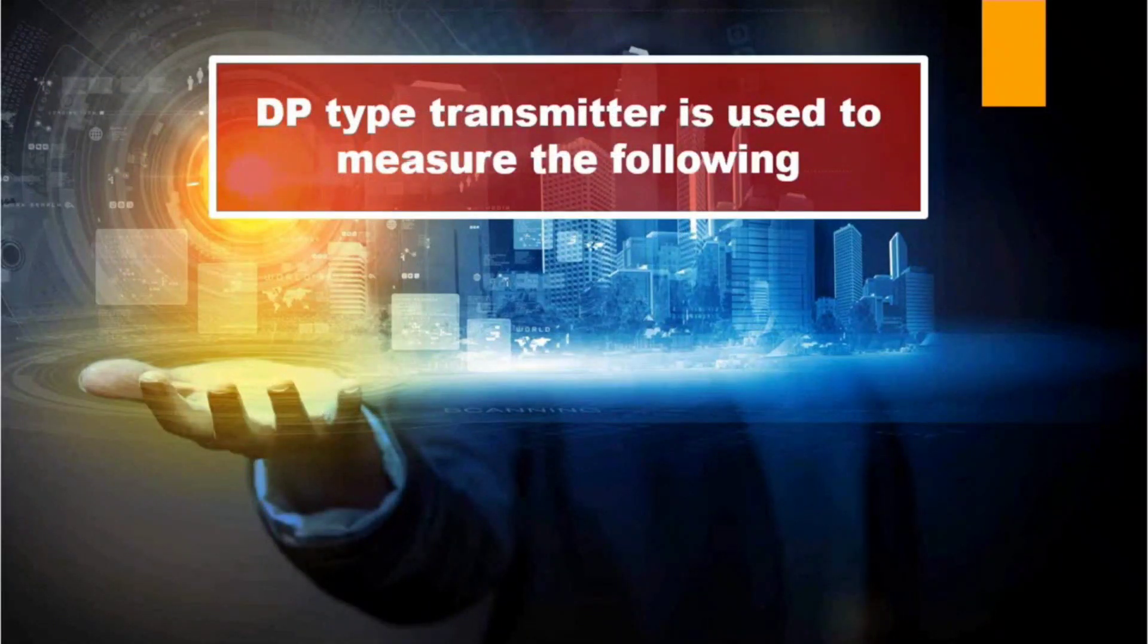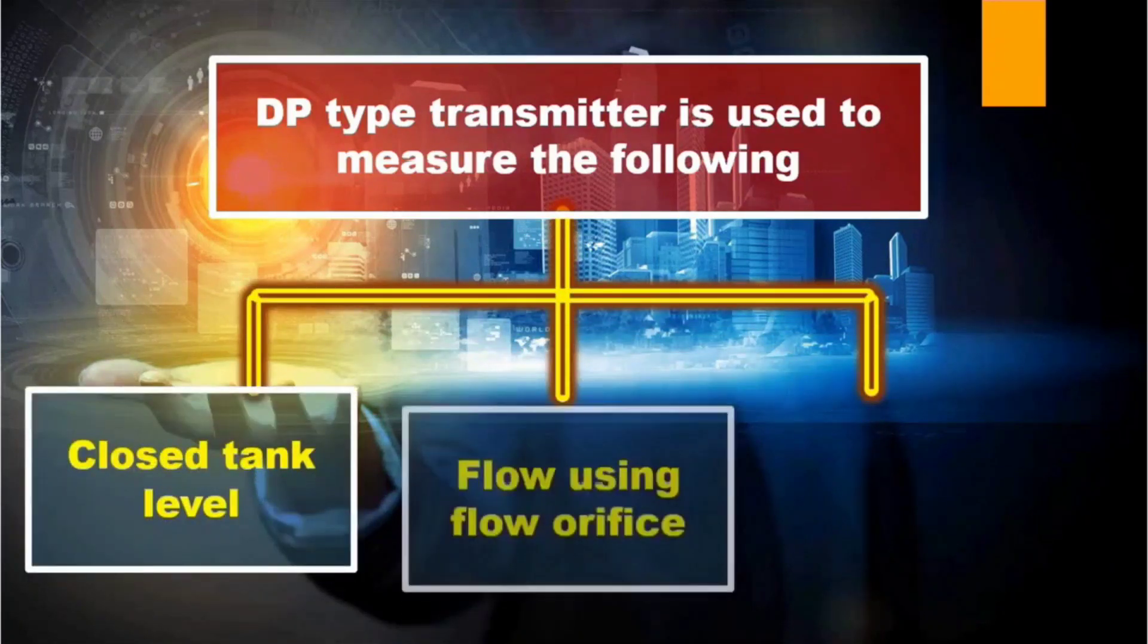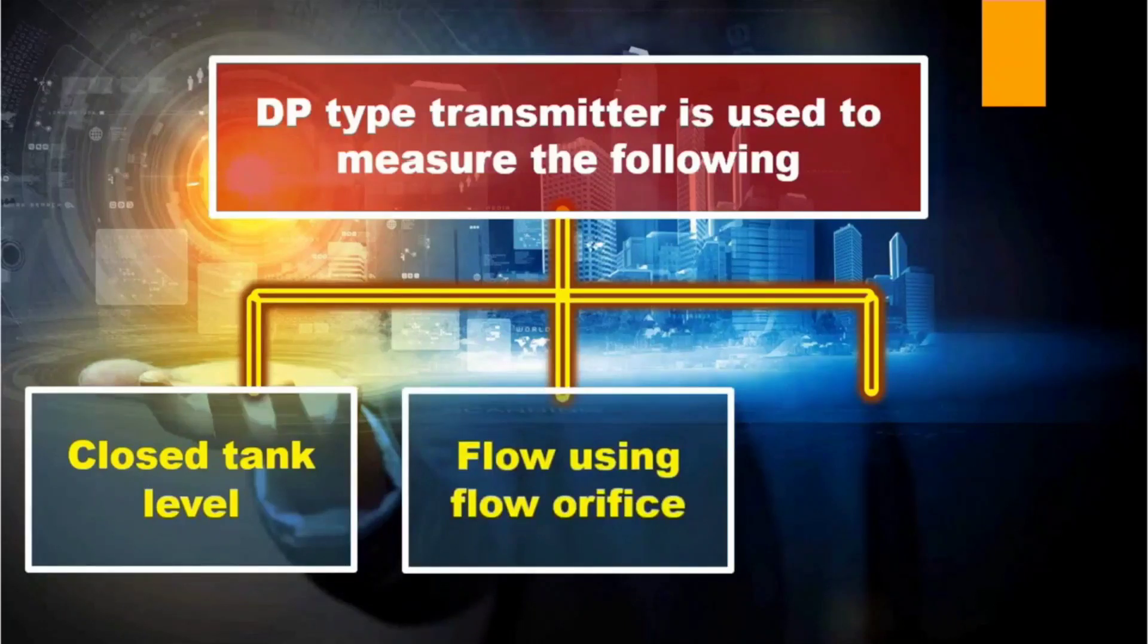There are some applications of DP-type transmitter. Let's see them: closed tank level measurement, flow measurement using flow orifice, and differential pressure measurement.